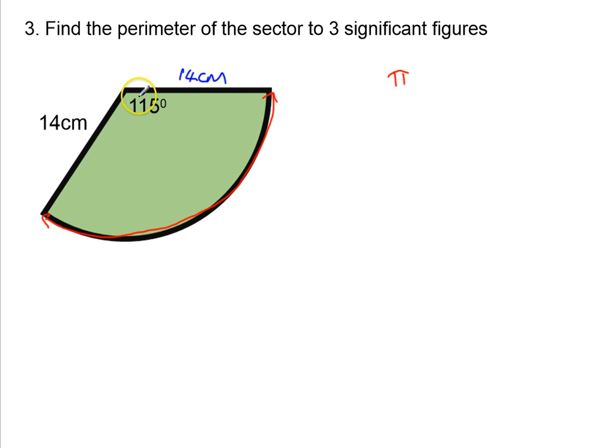And the diameter in this case is going to be, well the radius is 14, so the diameter is going to be 28. So I can do pi times 28, pi times the diameter.